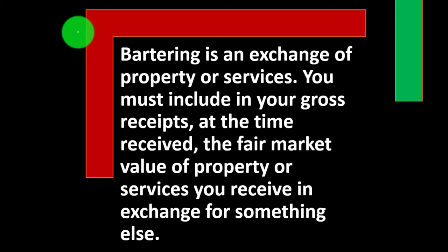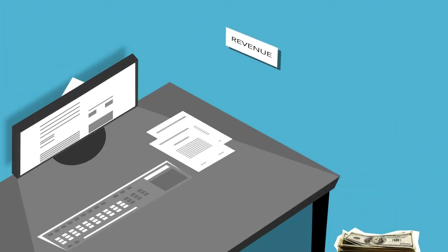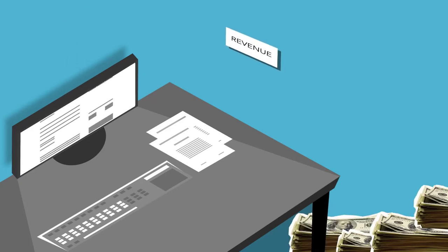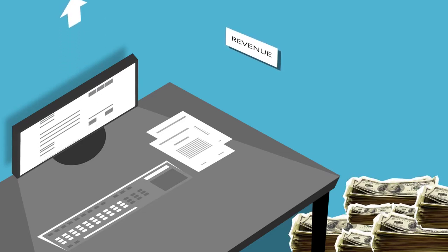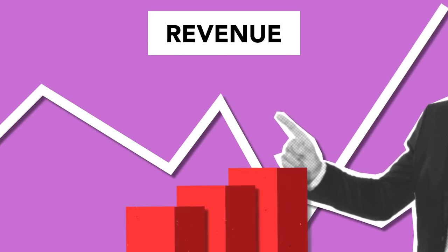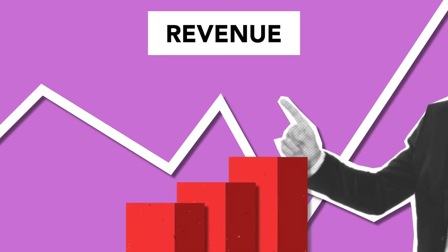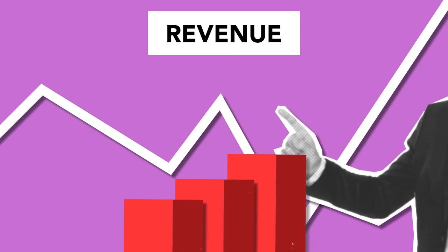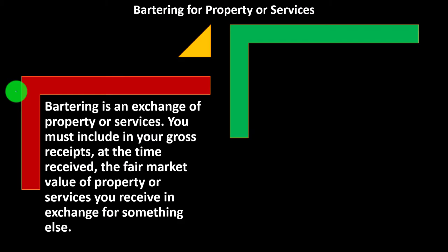Even if you have a barter situation, you should be recording the income. Bartering is an exchange of property or services. You must include in your gross receipts, at the time received, the fair market value of property or services you received in exchange. The value would typically be whatever the price of the thing you're receiving is, or the value of what you're giving in order to receive it — those are the ways you might value a barter transaction.